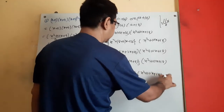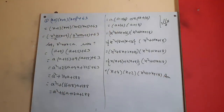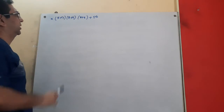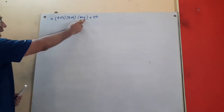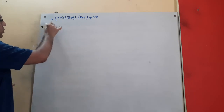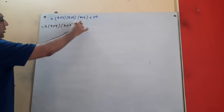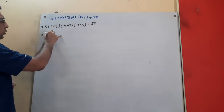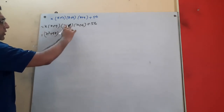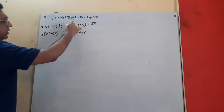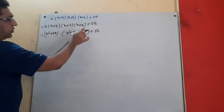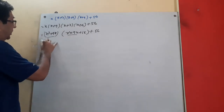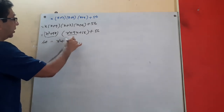The final answer for the first example is (x + 2)(x + 8)(x² + 10x + 18). Now for another similar sum: x(x+3)(x+6)(x+9) + 56. Note that 6 + 3 = 9, so we pair x with x+9 and x+3 with x+6, then multiply each pair. Let x² + 9x equal to a.